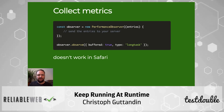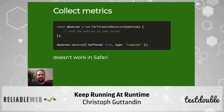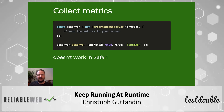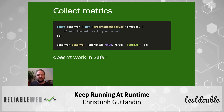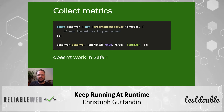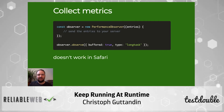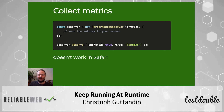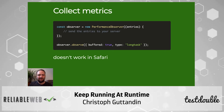Another observer we can use is the PerformanceObserver. It provides a lot of useful metrics around page load, and it is currently being extended to also provide runtime data. In Firefox and Chrome we can use it to get valuable information on events, which helps us identify those events that take more than an acceptable amount of time to process. It can also be used to get information about long tasks — a long task being one which takes longer than approximately 50 milliseconds. Unfortunately this is only available in Chrome yet, but it's better to know about a long task in one browser than none at all.